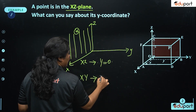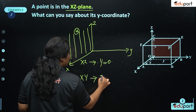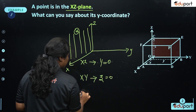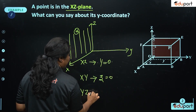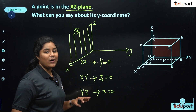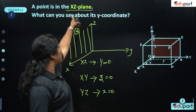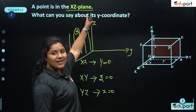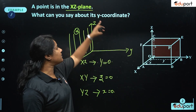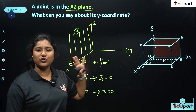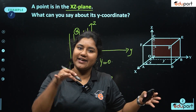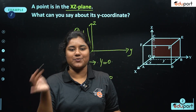Similarly, if a point is in the x-y plane, its z-coordinate is 0. If a point is in the y-z plane, its x-coordinate is 0. Each coordinate is 0 for the respective plane it does not lie on.